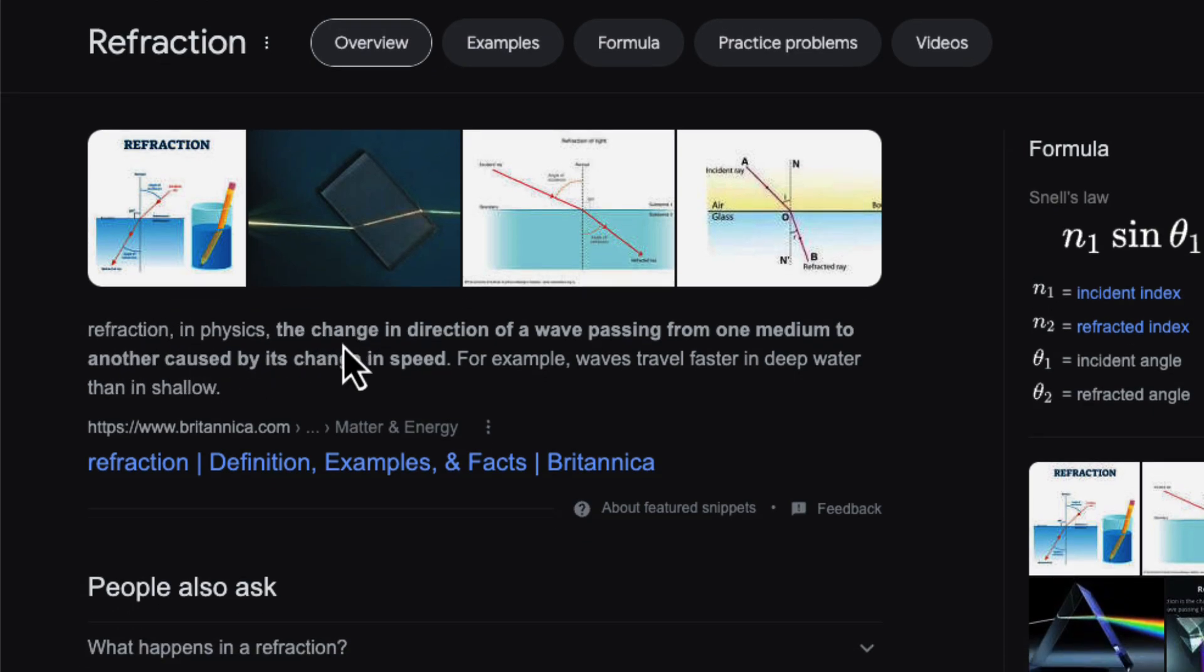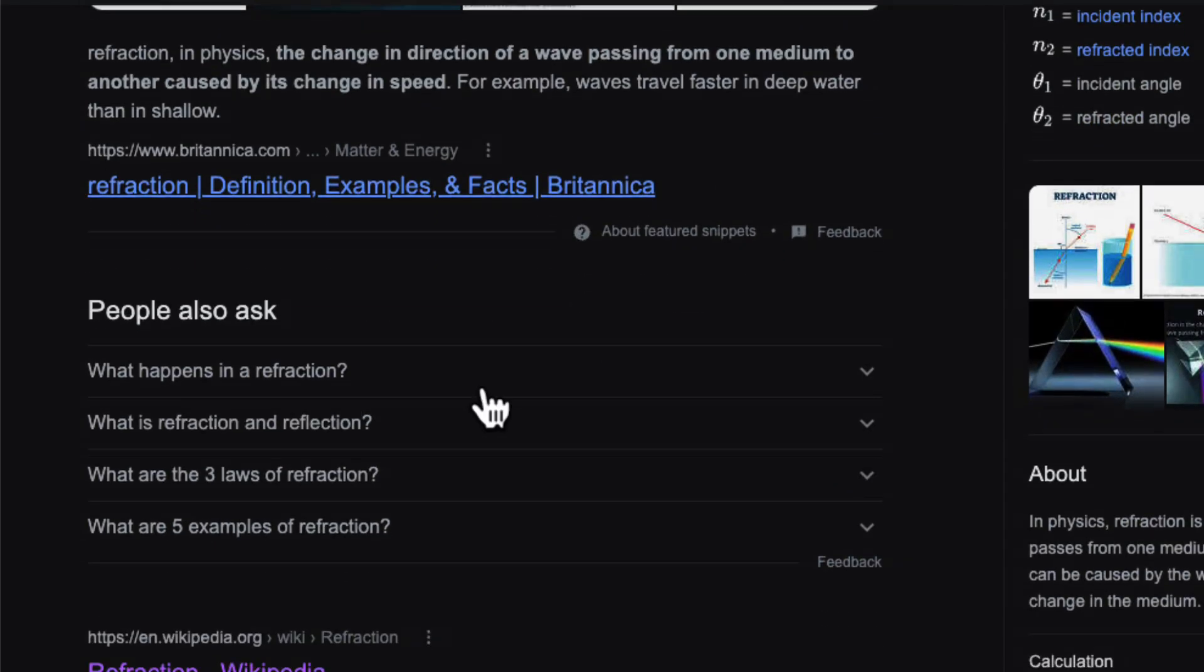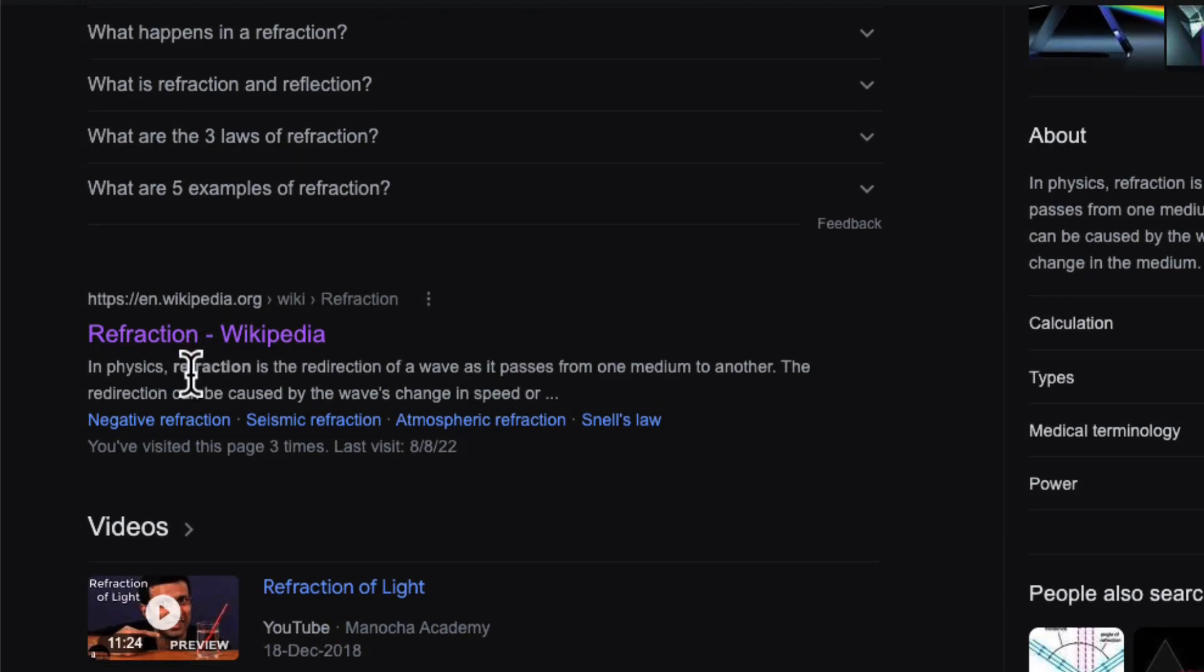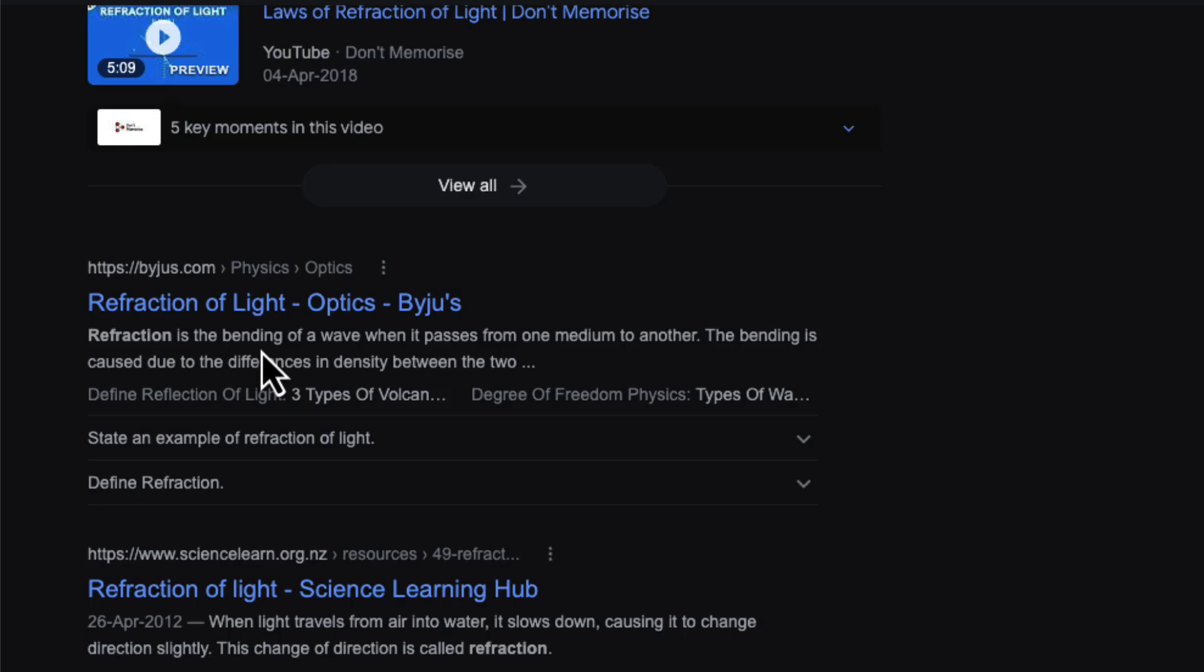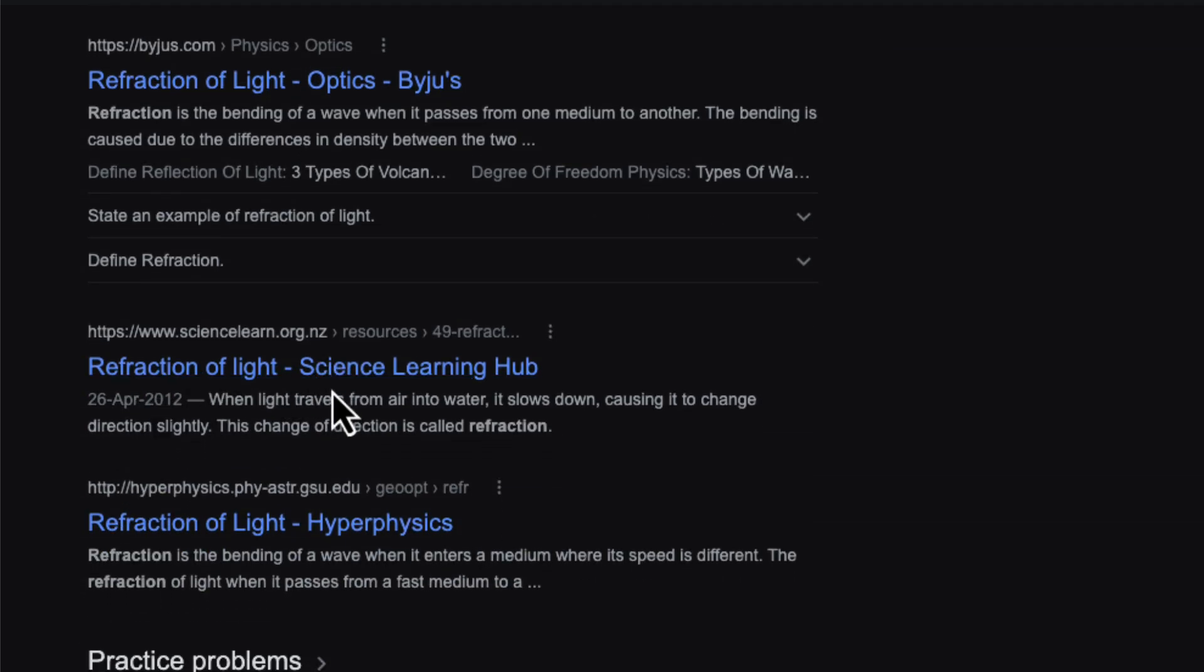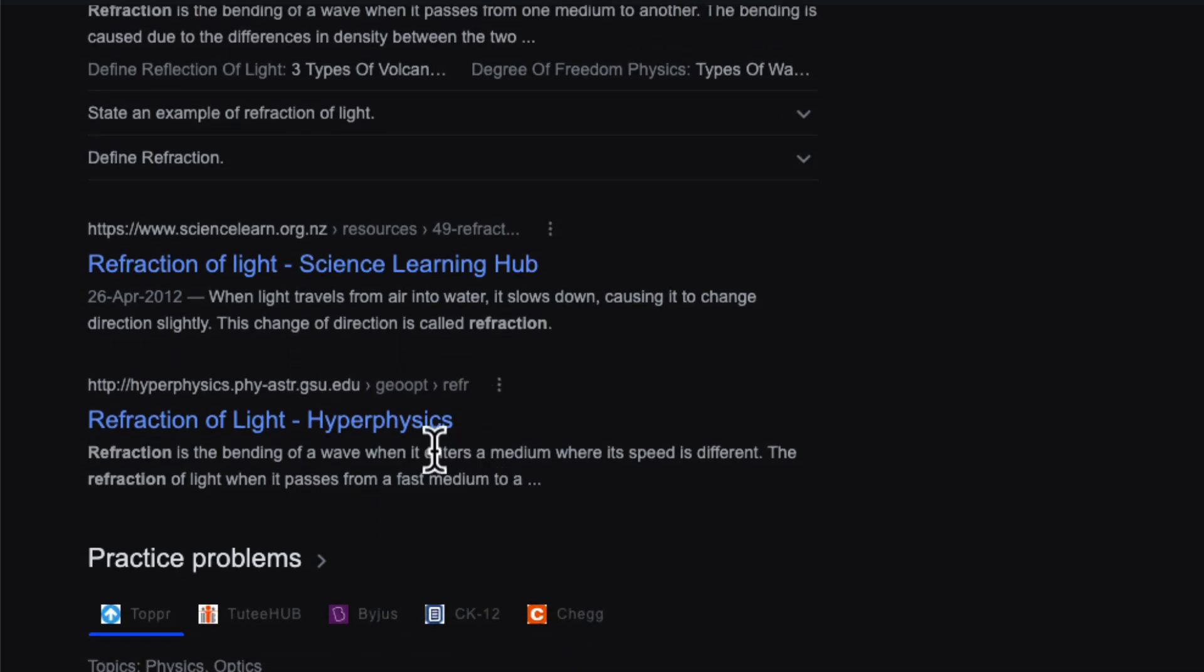Let's look at the definition. Refraction in physics is the change in the direction of the wave passing from one medium to another. So it's talking about changing in the direction. Let's look at what Wikipedia says. Refraction is the redirection of wave as it passes from one medium to another. When light travels from air into water, it slows down, causing it to change direction slightly. This change of direction is called refraction.